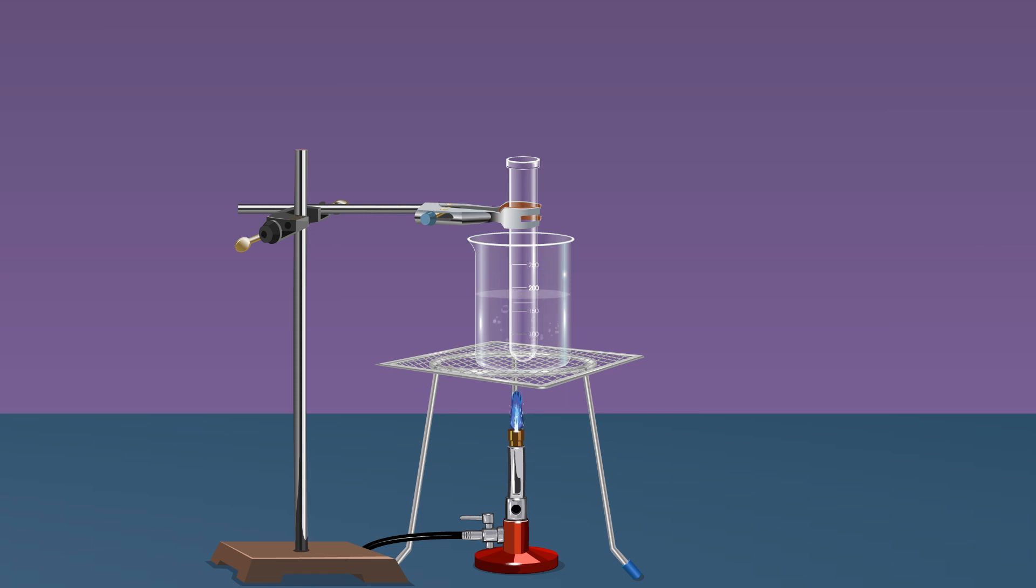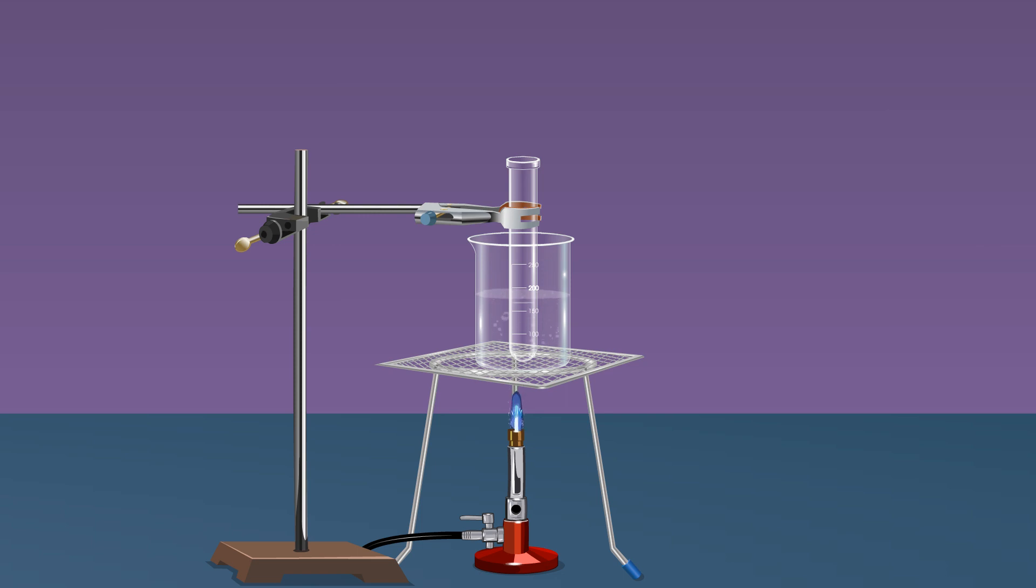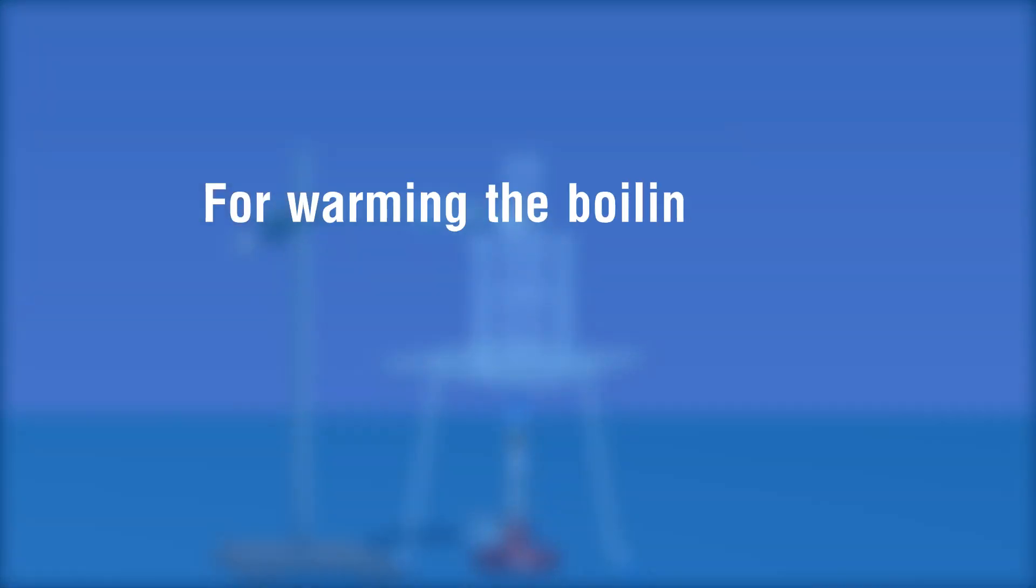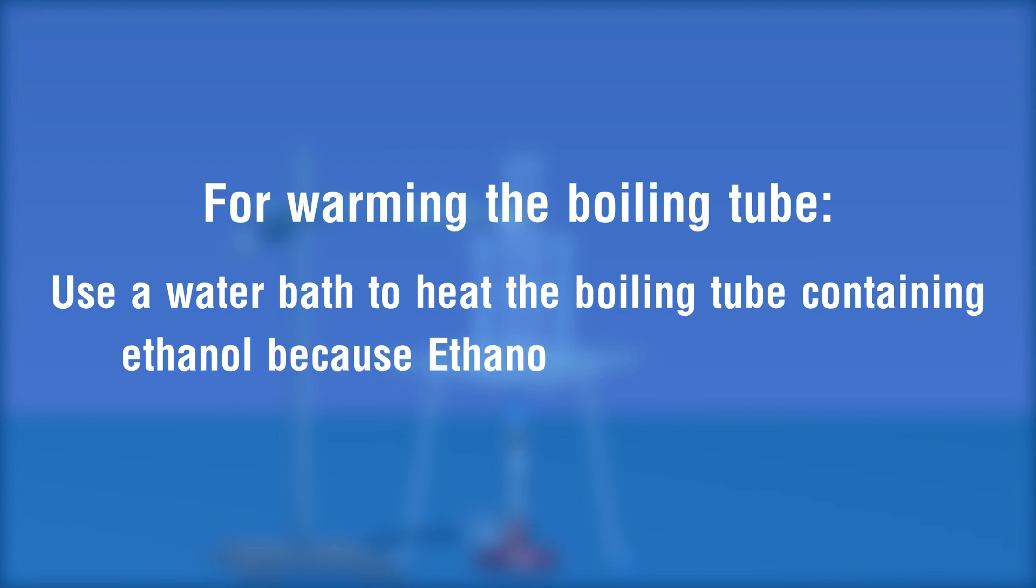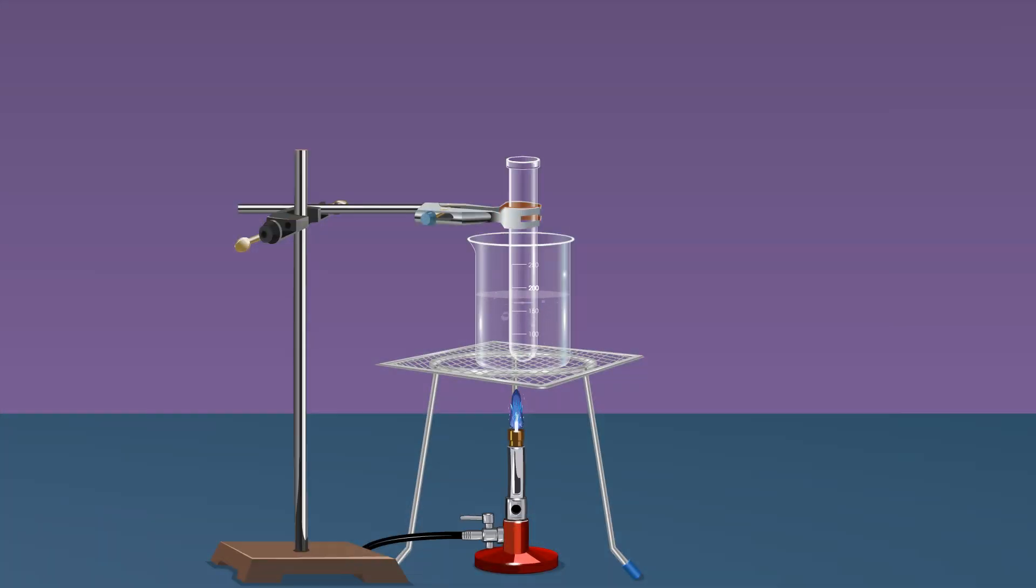For warming the boiling tube, use a water bath to heat the boiling tube containing ethanol because ethanol is highly flammable. The boiling tube containing liquid is uniformly heated or warmed in the water bath at 60 degrees Celsius. Unclamp the boiling tube from the stand and use a boiling tube holder to hold the boiling tube.